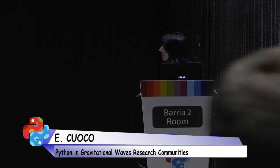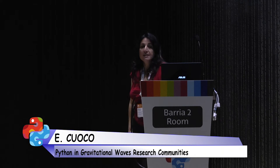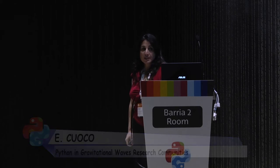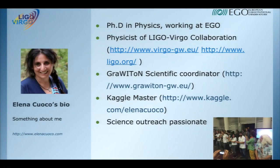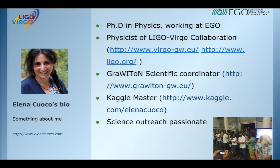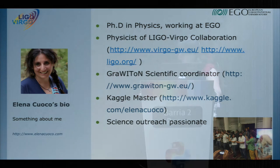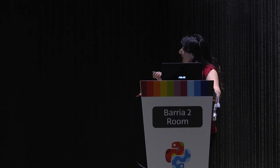Before starting, something about me. I am a physicist working as a data scientist at the European Gravitational Observatory in Italy. I'm a member of the LIGO-Virgo collaboration, and I'm also the scientific coordinator of the European project Graviton, which has the aim to train 14 PhD students in Europe. I am also a machine learning passionate — during my free time I participate in Kaggle competitions — and a science outreach passionate.